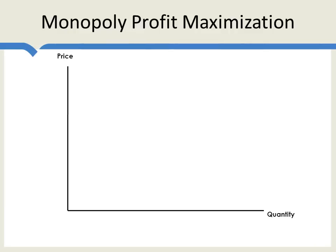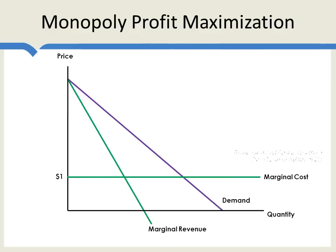Here's the standard monopoly profit maximization story, which you can find in any Principles of Economics textbook. Here's the demand curve for the monopolist's product, the marginal revenue curve, and the marginal cost curve. The marginal revenue curve tells the monopolist the addition to revenue from selling one more unit. The marginal cost curve tells the monopolist the addition to cost from producing one more unit. The monopolist wants to keep producing so long as marginal revenue exceeds marginal cost — that is, until marginal revenue equals marginal cost.